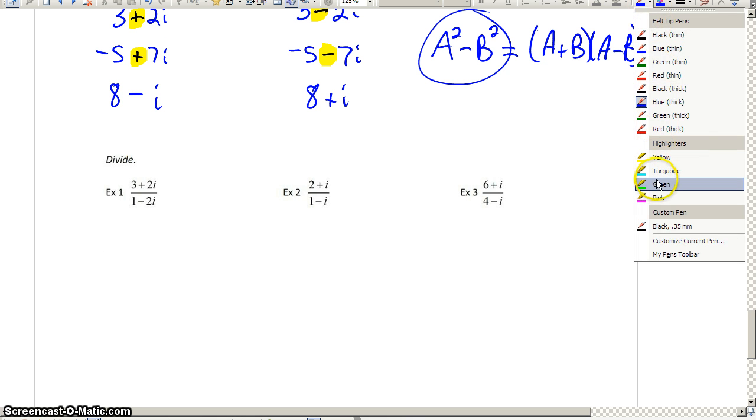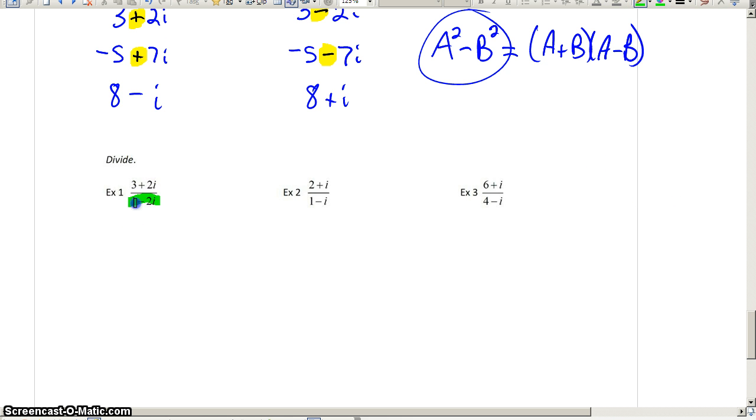Problem number 1, we're asked to divide, but the real problem is that in the denominator that we see here, we have a radical. We have a square root of negative 1 that is hidden, represented as an i. And we saw earlier in this unit, we cannot have square roots in our denominator. So, the way we're going to deal with this is we're going to multiply the top and the bottom by the conjugate of 1 minus 2i. We're going to multiply the top and the bottom by 1 plus 2i.